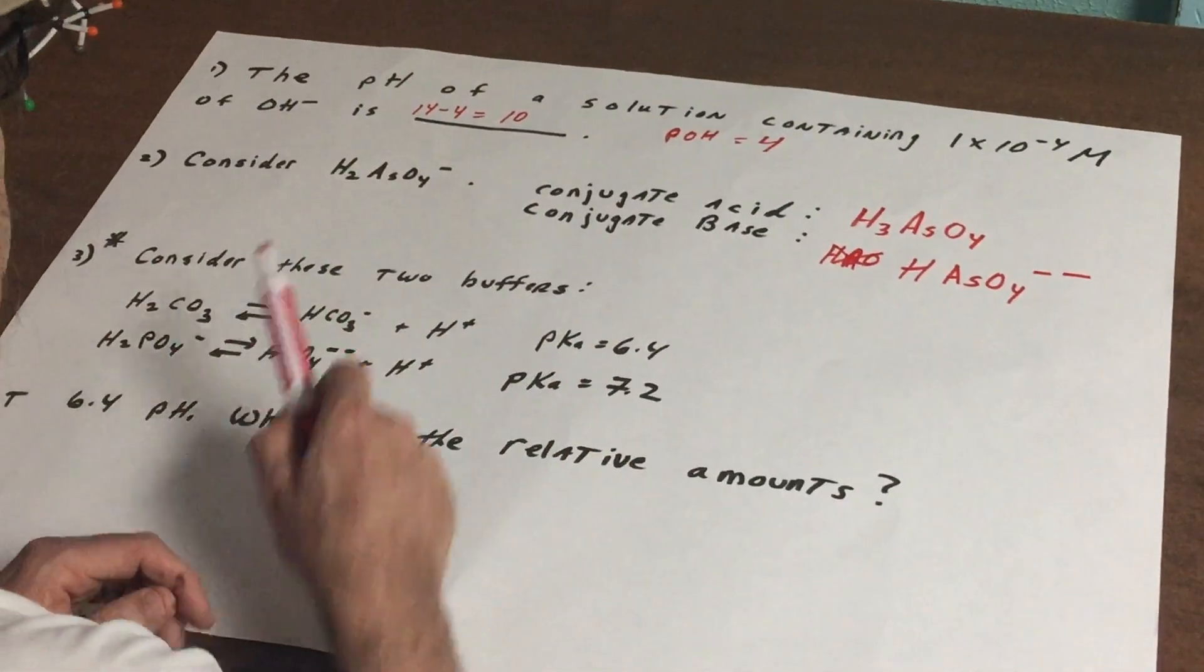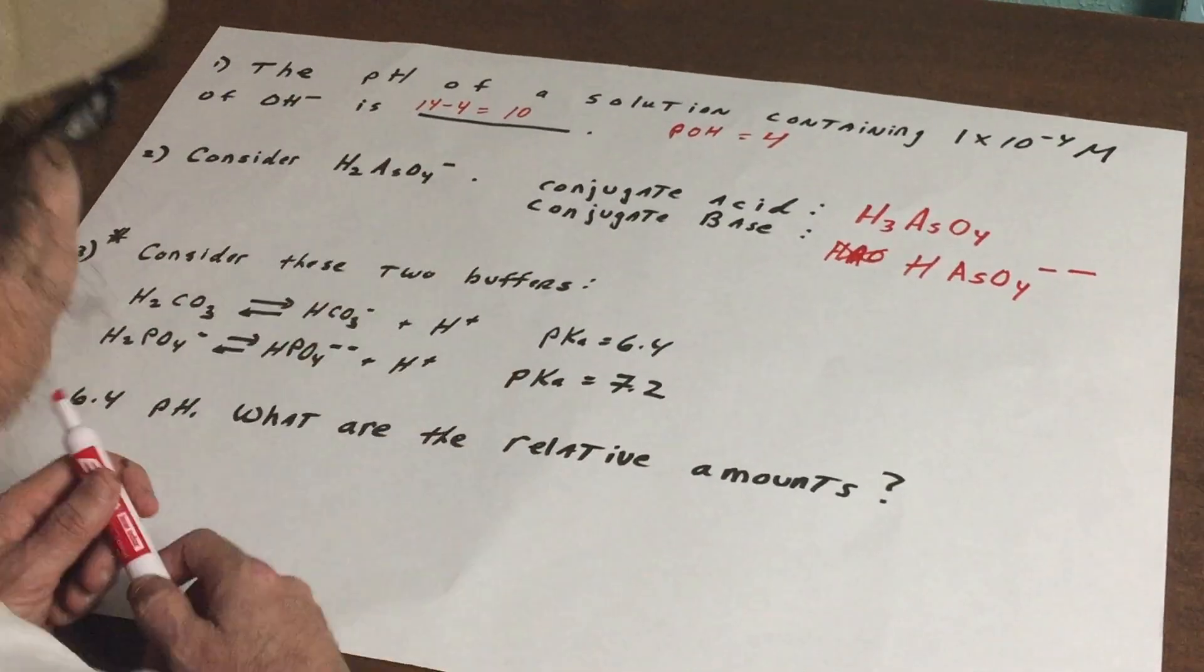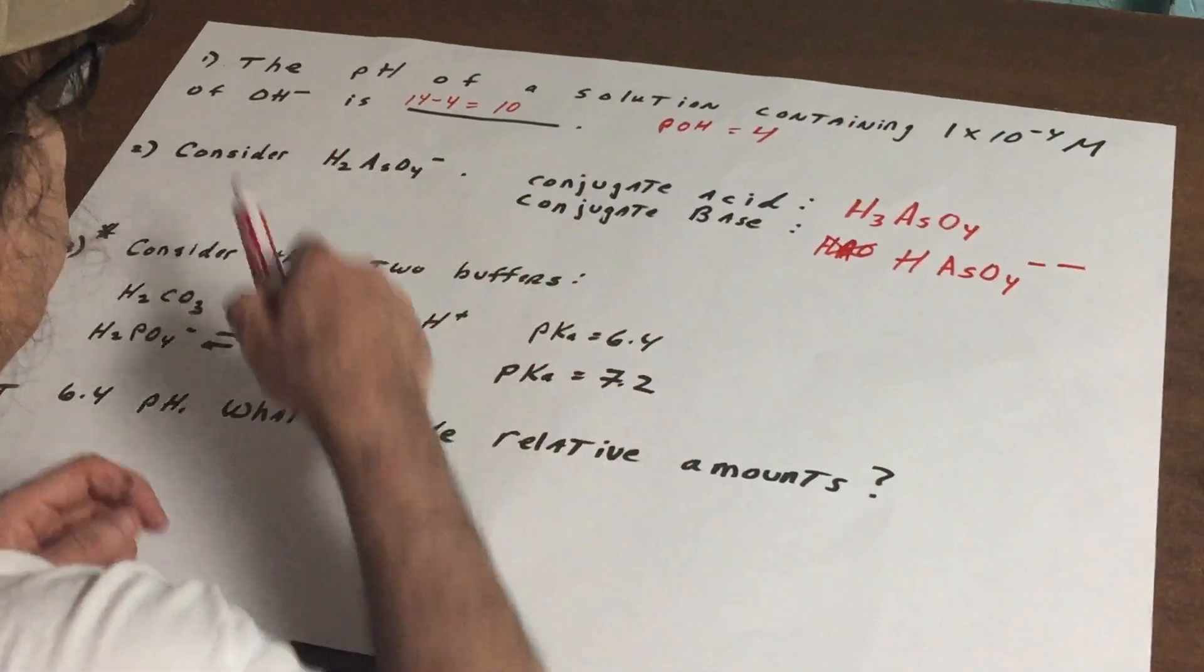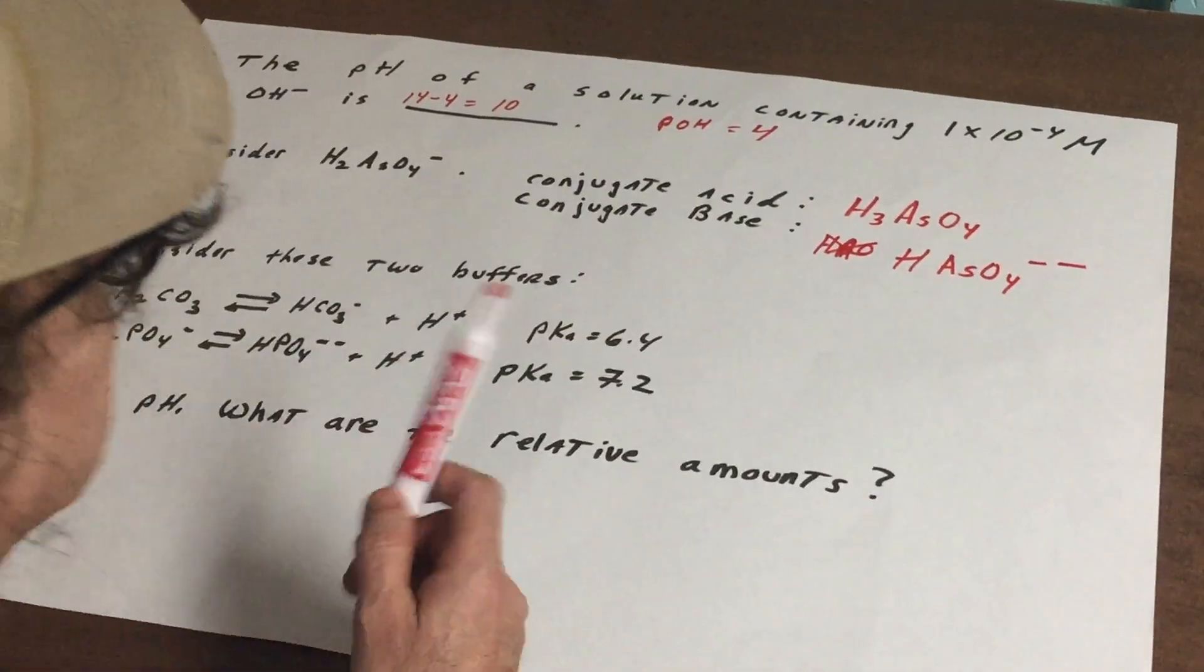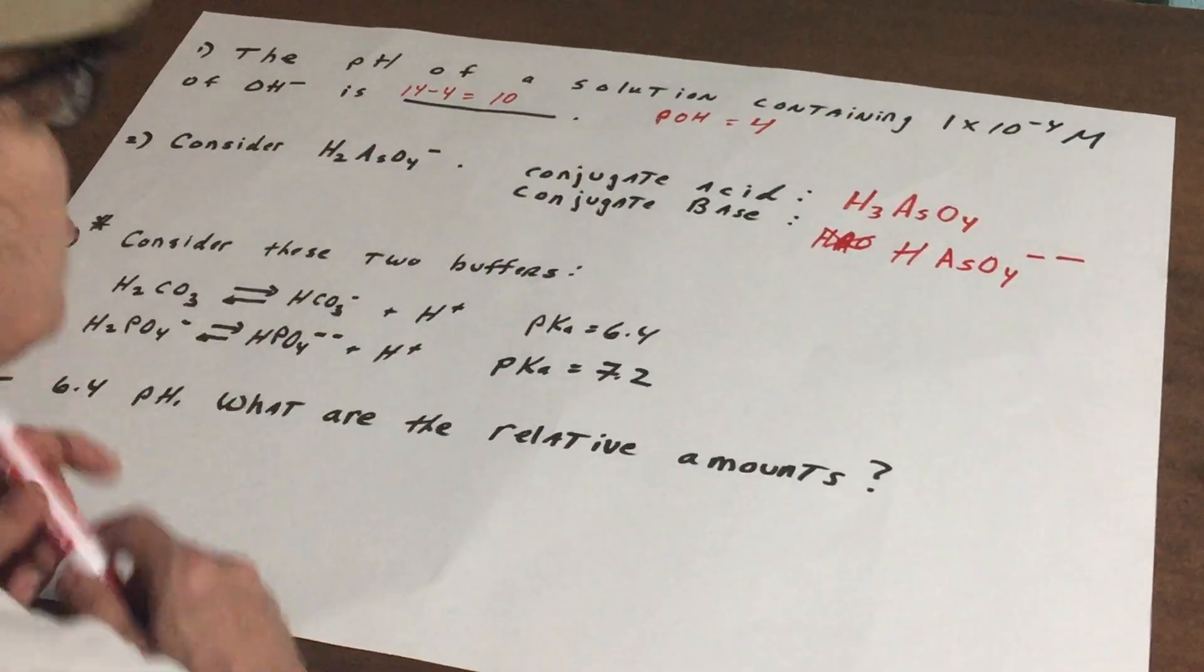So the rule is when we add an H we get rid of a negative. When you remove an H you put in an extra negative. All right, those two are straightforward.